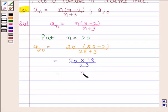Hence the required 20th term that is a_20 is equal to 360 by 23. This is our required answer.